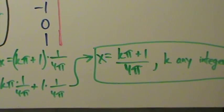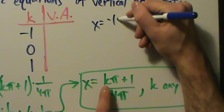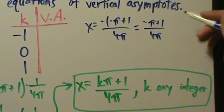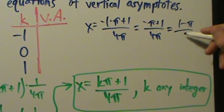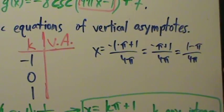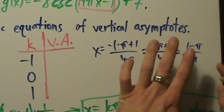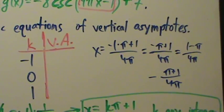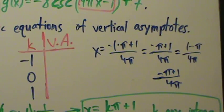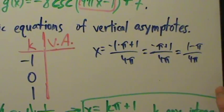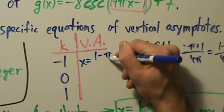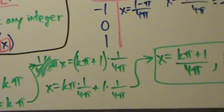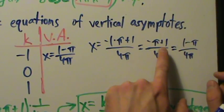When k = -1: x = (-1·π + 1)/(4π) = (-π + 1)/(4π). It's mathematically cleaner to rewrite -π + 1 as 1 - π, so x = (1 - π)/(4π). Be careful not to write this ambiguously - make sure it reads clearly as a fraction. So the vertical asymptote is x = (1 - π)/(4π).